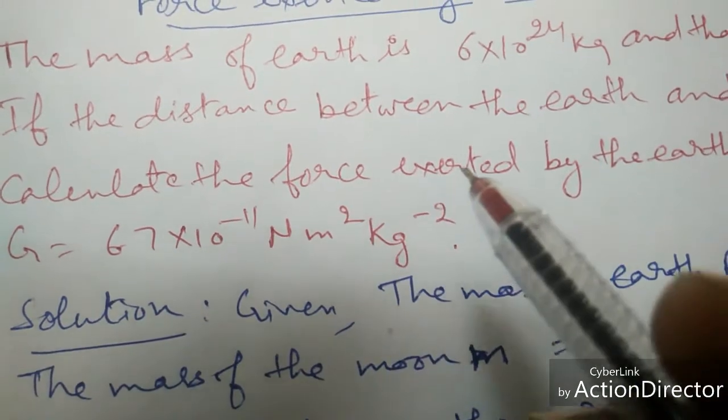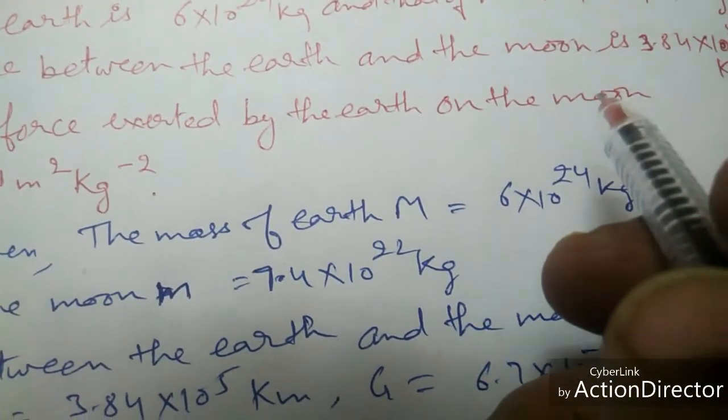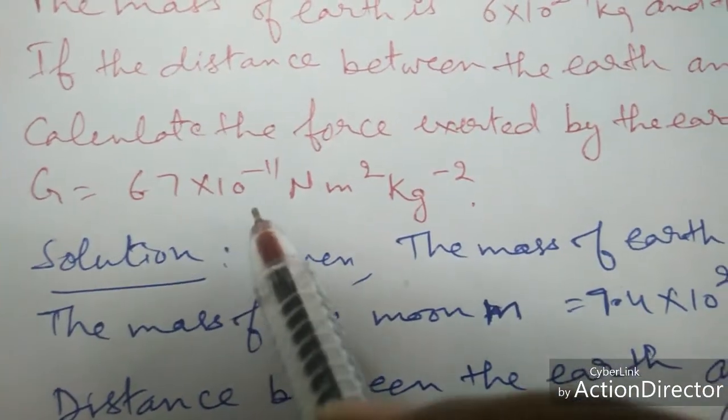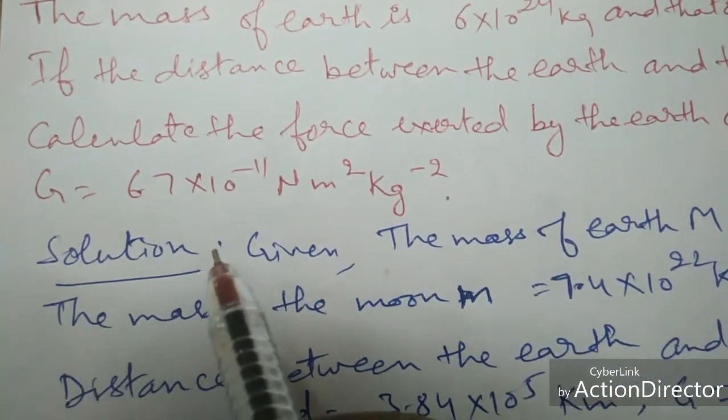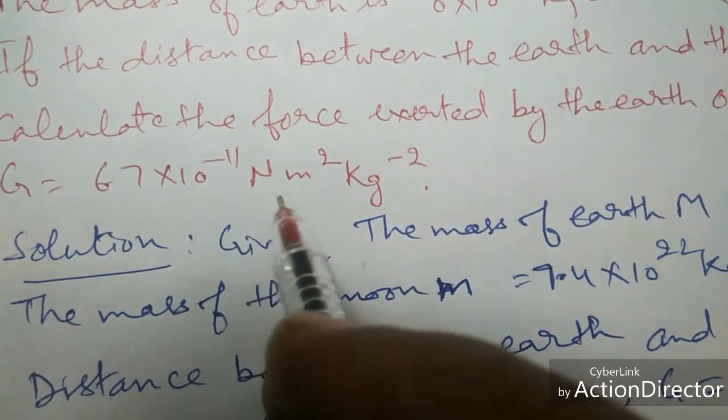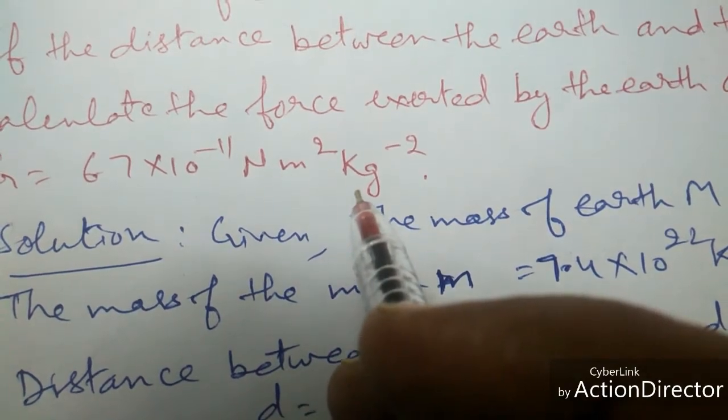If the distance between the Earth and the Moon is 3.84 × 10⁵ km, calculate the force exerted by the Earth on the Moon. The force of gravitation constant given to us is 6.7 × 10⁻¹¹ Nm² per kg².